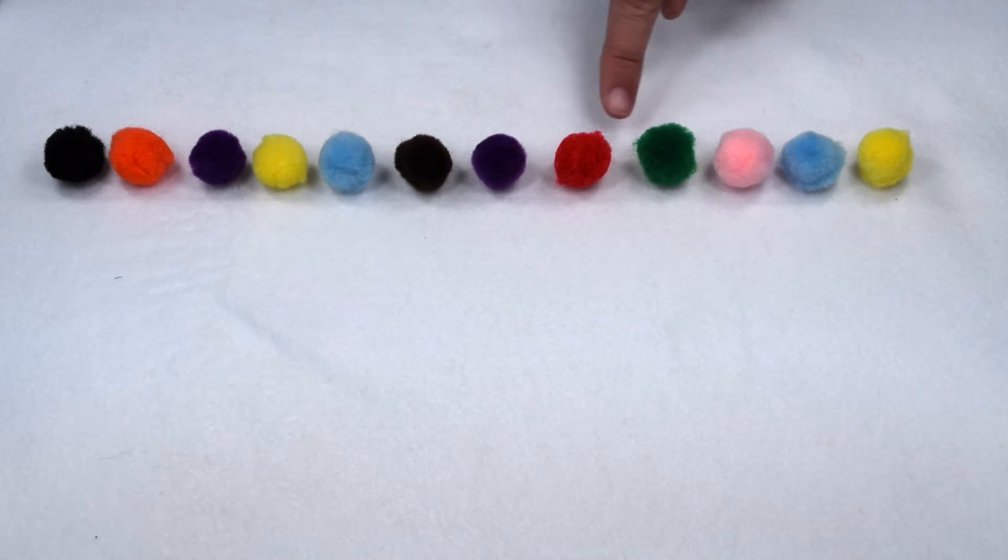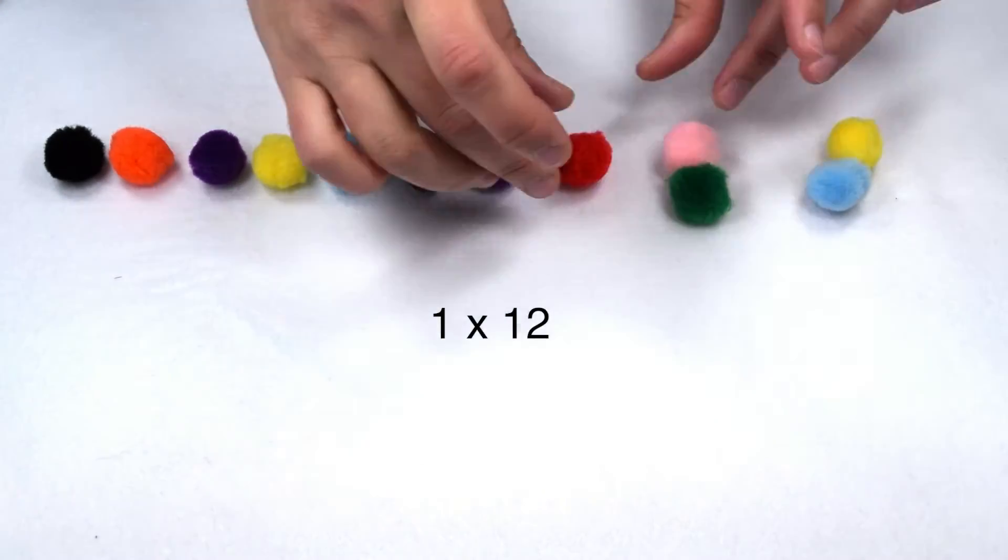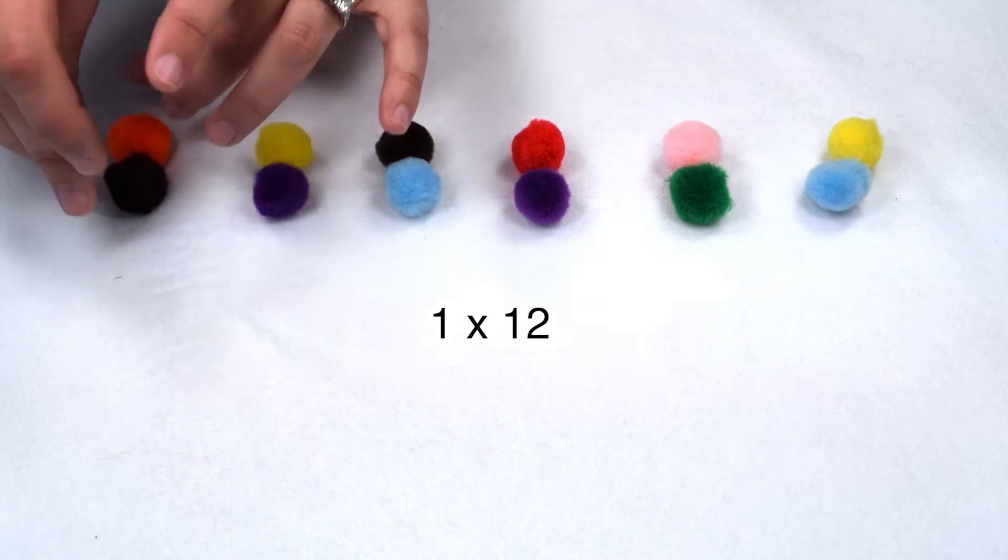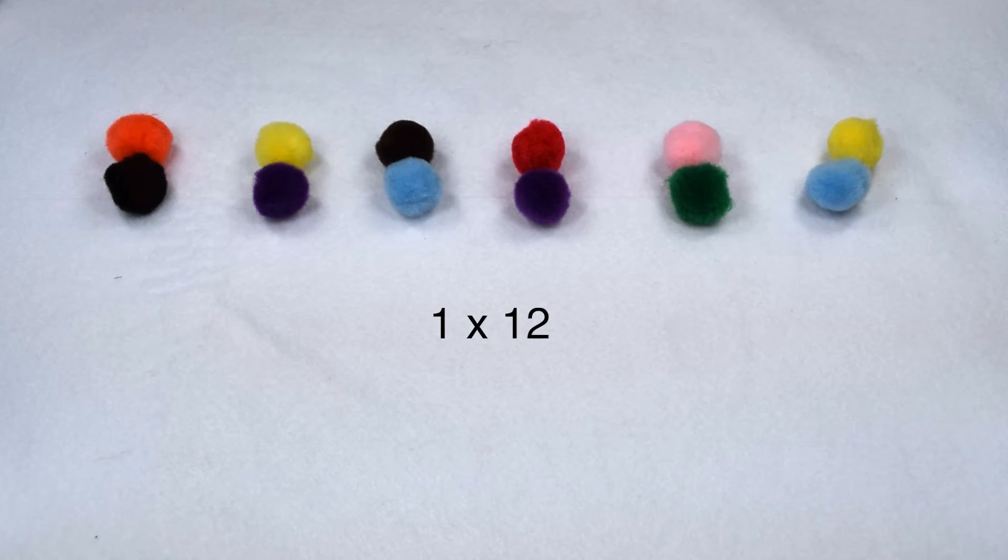Let's start by putting our 12 items with one item in each group. When we do that we make 12 groups. So our first factor pair is 1 times 12. Now what if we put our items together so that there's two items in each group? When we do that we can make six groups. So our next factor pair is going to be 2 times 6.